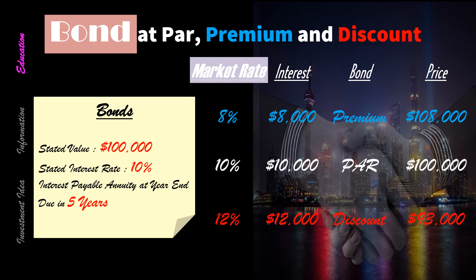Now let's say the face value is $100,000 again but the market rate is 8%. This bond will be trading at a premium — when the stated rate is greater than the market rate, it's going to be trading at a premium because more people want this 10% bond. Therefore, they need to raise the price to cover the demand for it. Discount and premium do not represent which bond is better or worse to buy. It simply represents that the stated rate is less than or greater than the market rate.